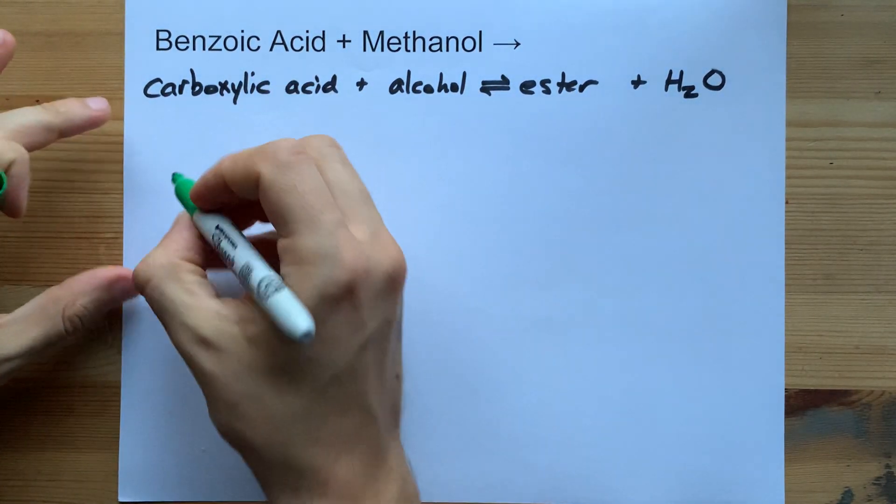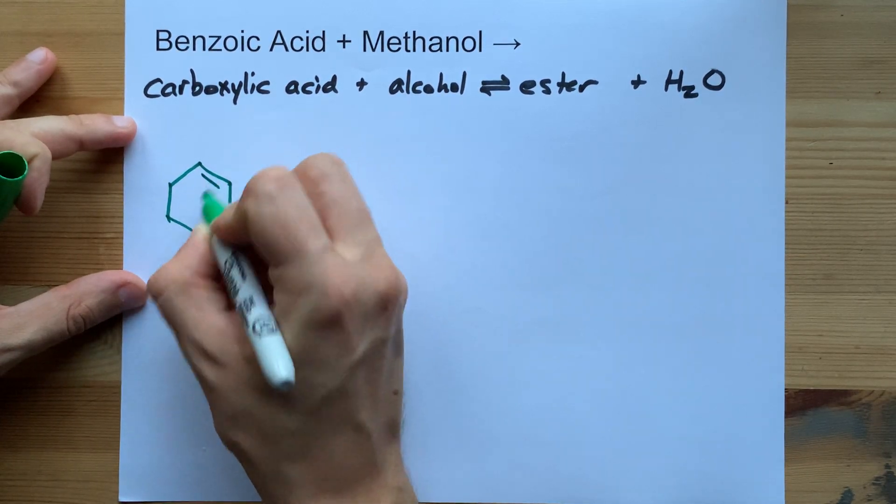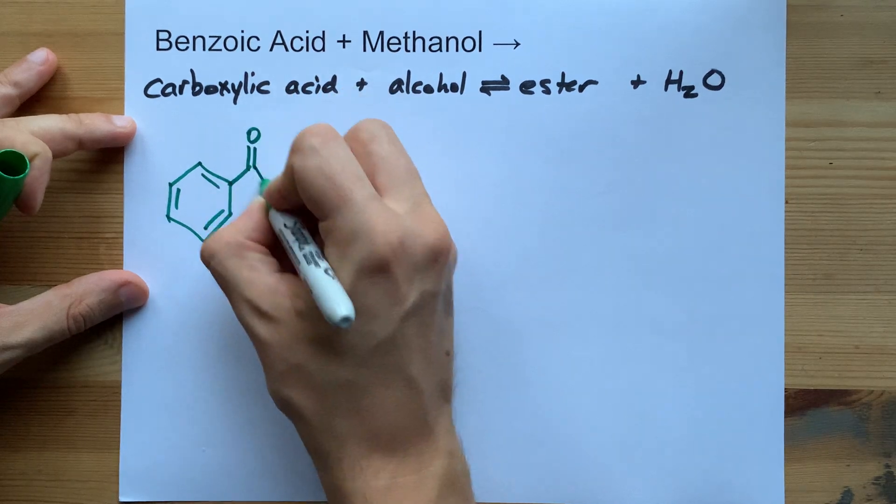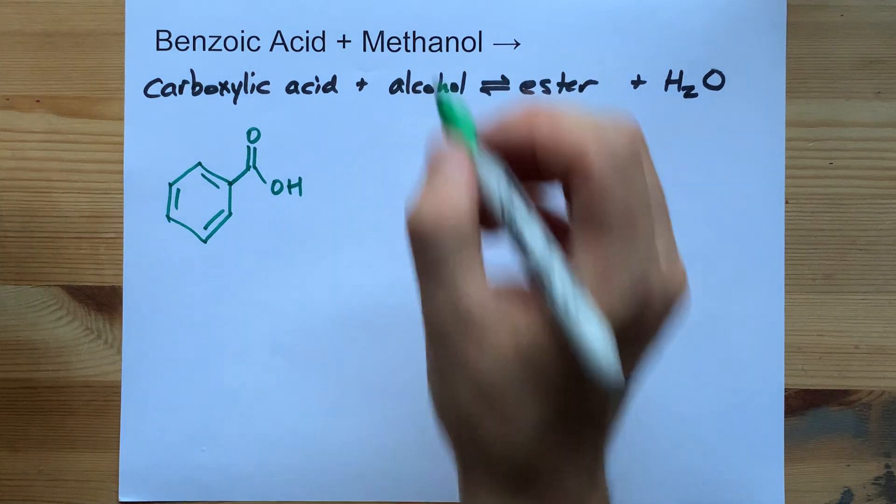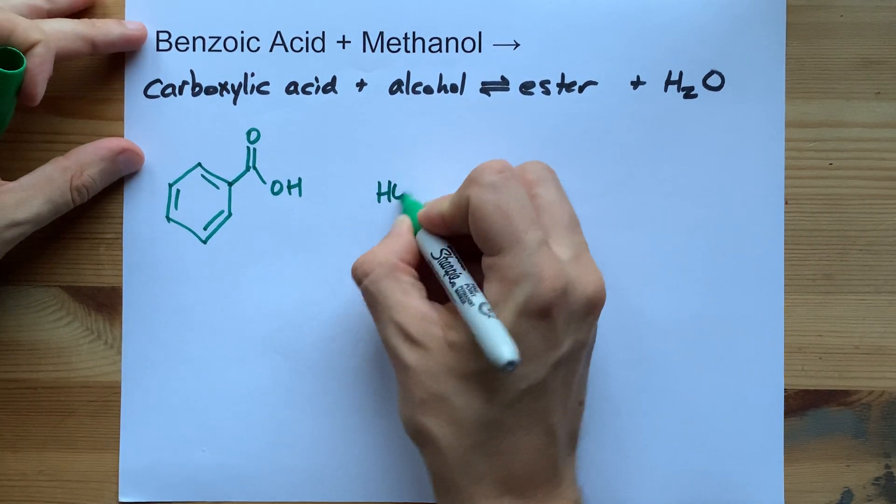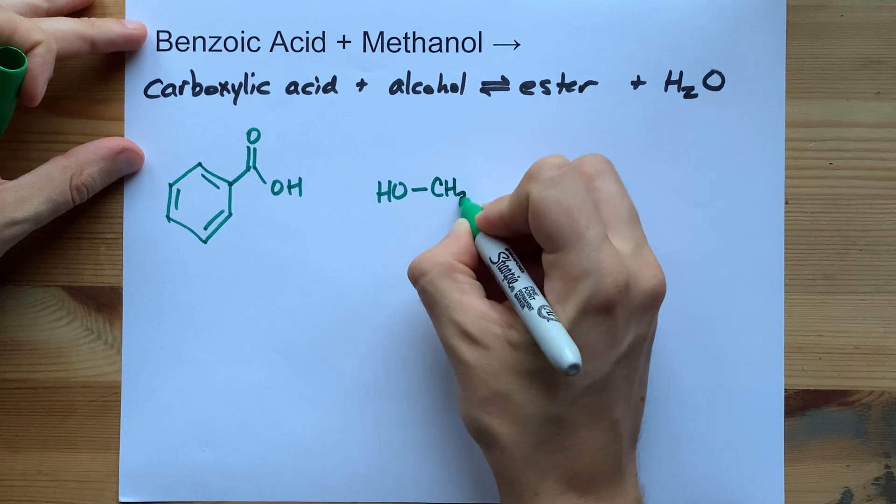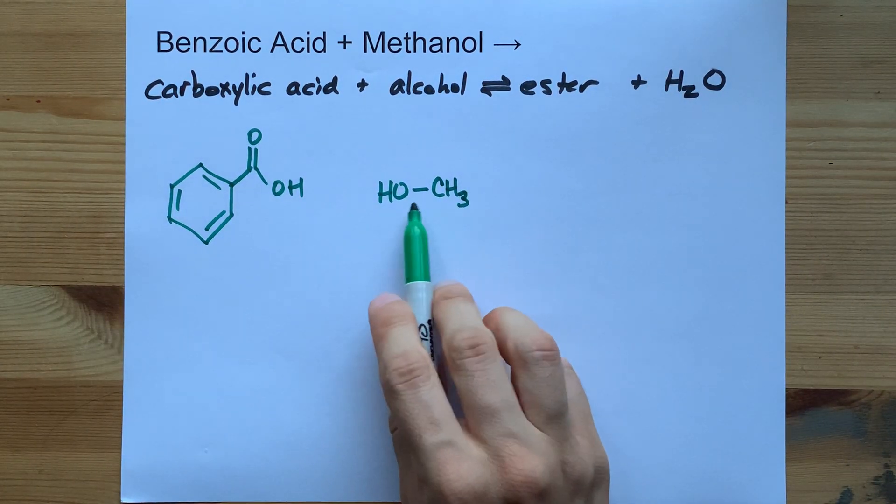Let's draw this out for ourselves. Benzoic acid is a benzene ring that has an extra COOH attached to it. Methanol is an alcohol that only has one carbon attached to it. That carbon obviously is filled out with its hydrogen, so it's CH3OH.